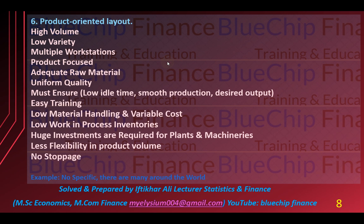Mainly jo is ka facility layout hai wo product focused hota hai — yani ke aap product ko focus karte hain ke kis type ki product is ke andar taiyar ho. Kyunke jab ek hi type ki cheez produce ho rahi ho aur us mein quality ki variation aani shuru ho jaye to phir question mark uthne shuru ho jate hain. Isi wajah se raw material ke upar bohat ziyada focus kiya jata hai aur uniform quality ko ensure karna bohat ziyada zaroori hai.